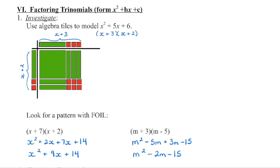We're going to multiply the first terms to get that x squared. We're going to multiply the outside terms to get 2x. We're going to multiply the inside terms to get 7x, and we're going to multiply the last terms to get 14.